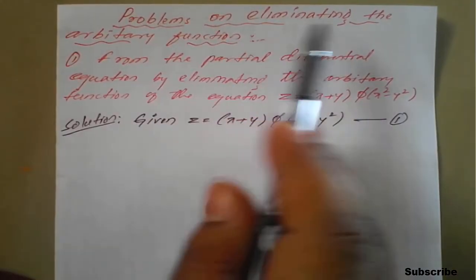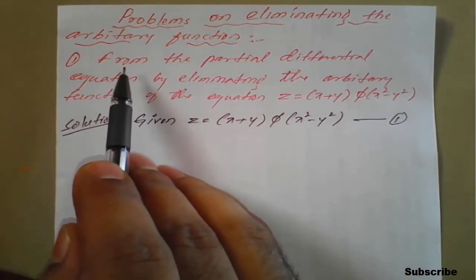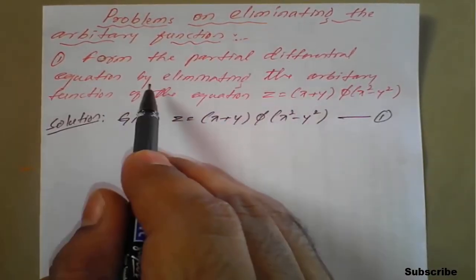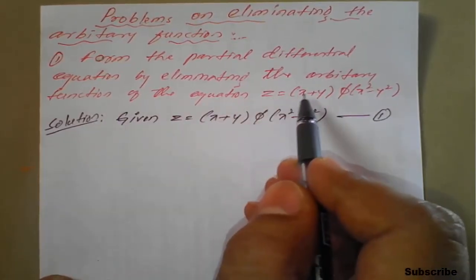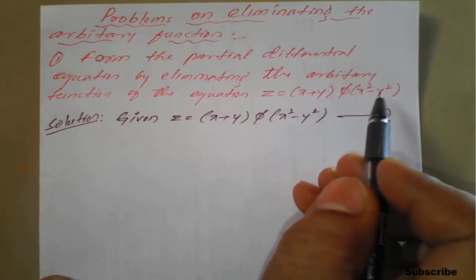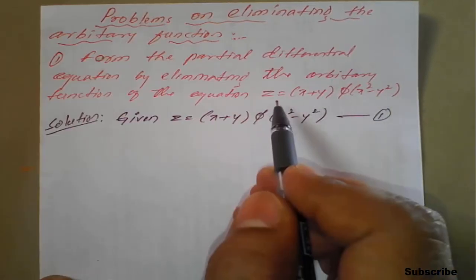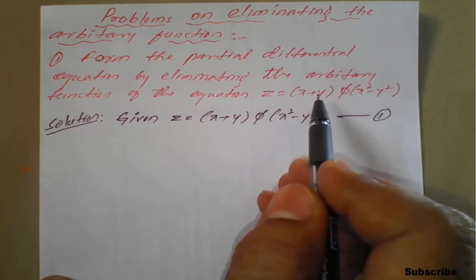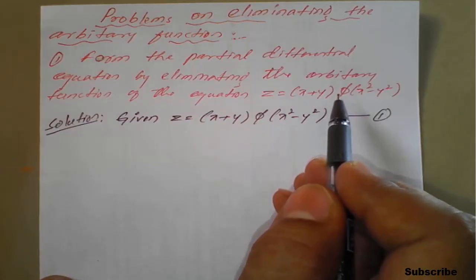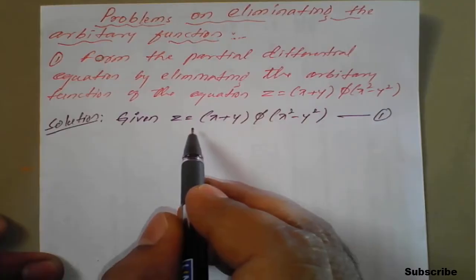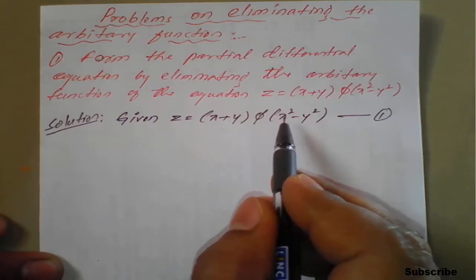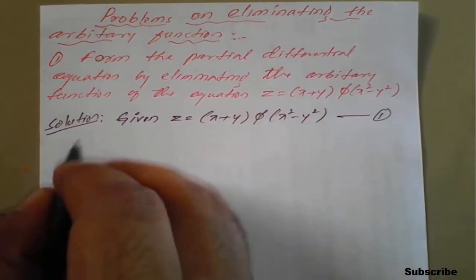Now, problems on eliminating the arbitrary functions. The question is: form the partial differential equation by eliminating the arbitrary function from the equation z = (x + y) · φ(x² − y²). This equation has two independent variables x and y and one arbitrary function φ. We need to eliminate φ to obtain a partial differential equation. The given equation — equation number one — is z = (x + y) · φ(x² − y²).